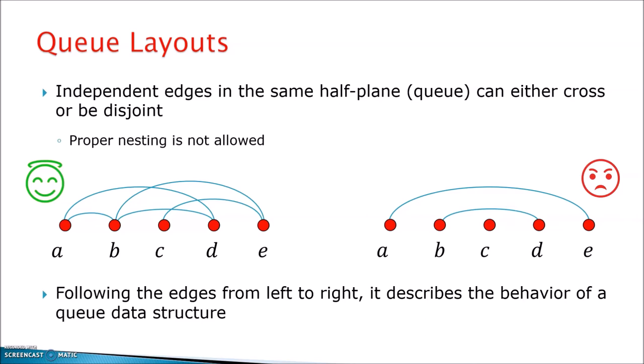So in these queue layouts, which are describing the behavior of a queue data structure, in terms of the constraints on the linear layout, we have that the crossings are allowed, but what is not allowed is the nesting, is the proper nesting of two edges or more than two edges in the same page.